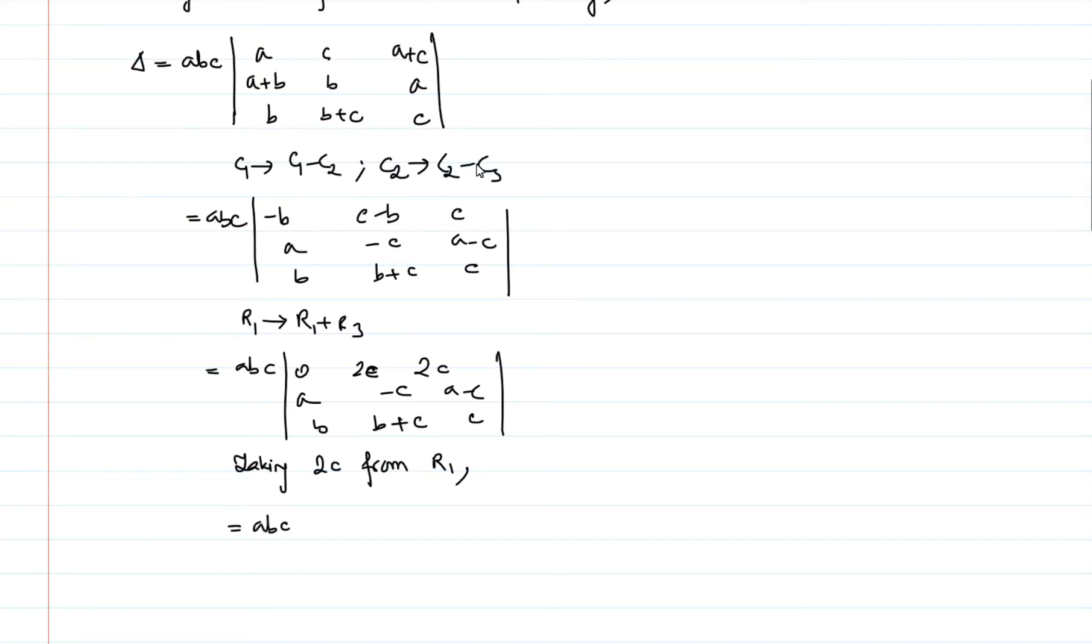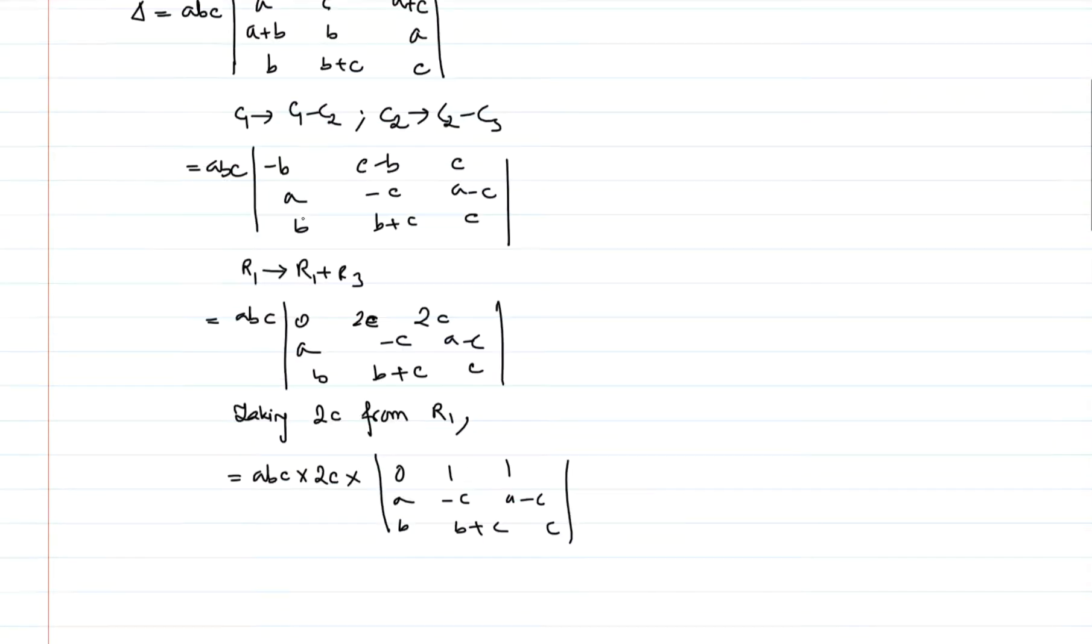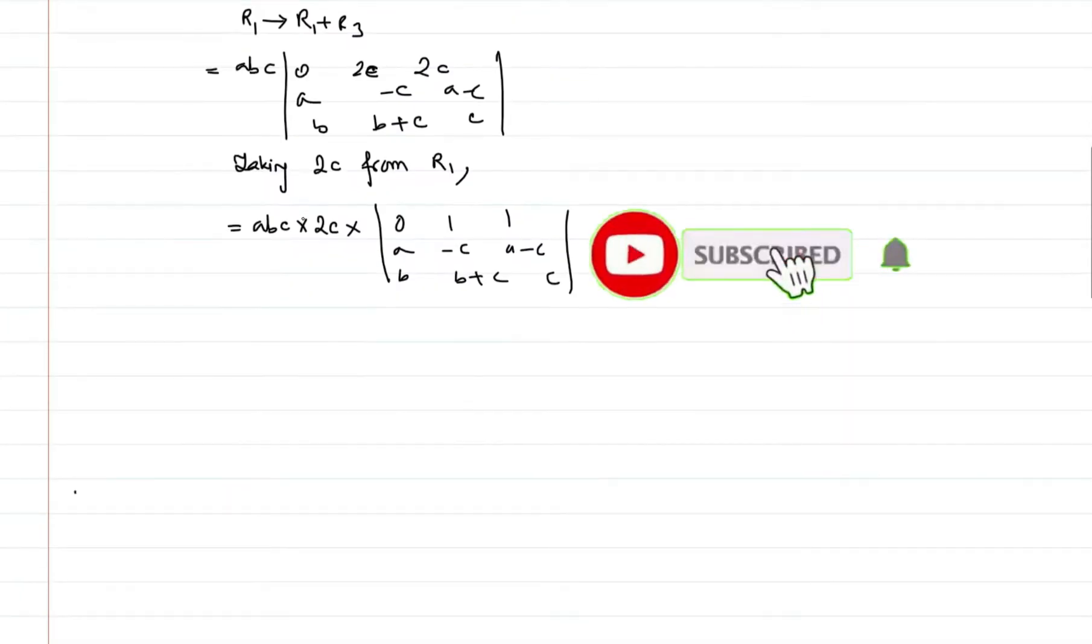We get here abc times 2c times this determinant which is 0, 1, 1, a-c, a-c, b, b+c, c. All right, now it becomes very solvable.